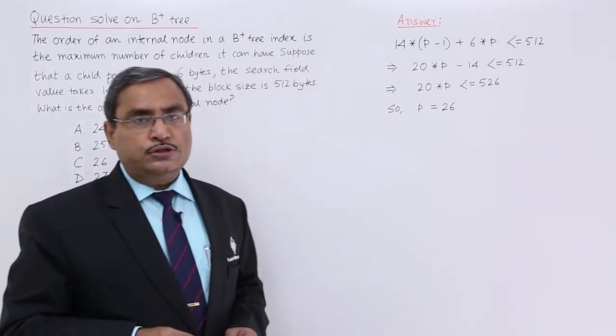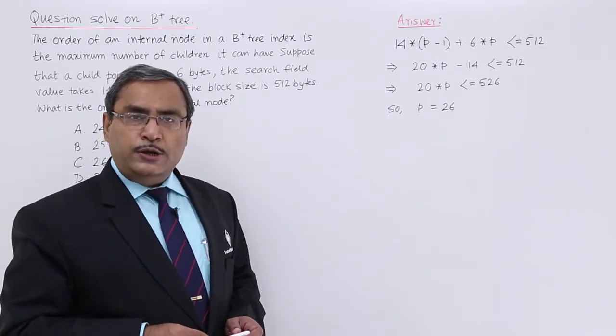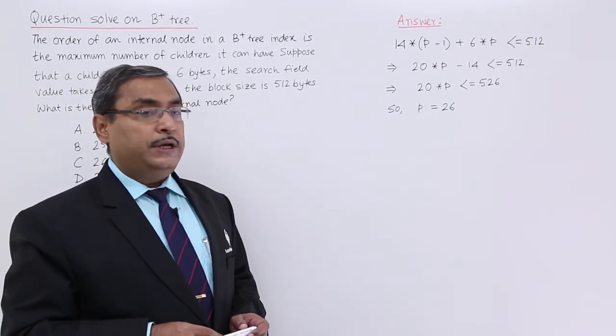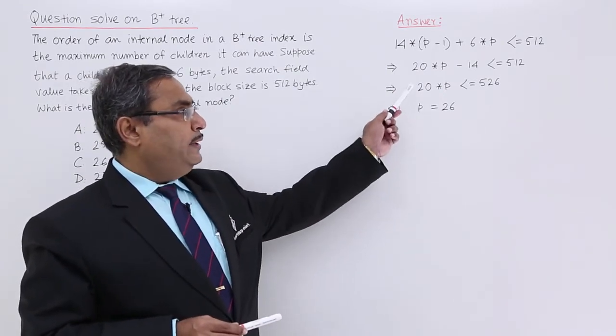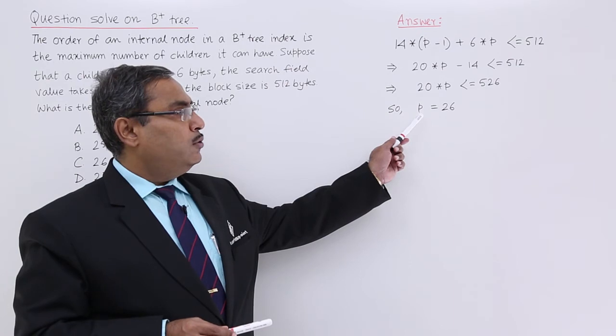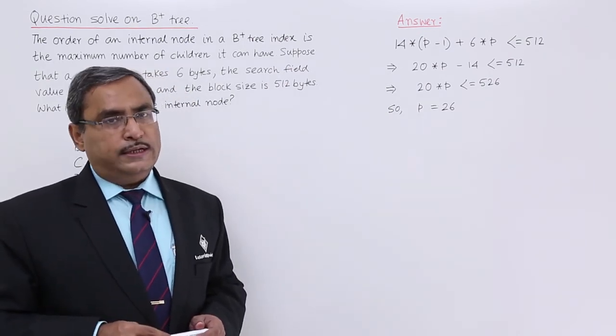Here is the respective calculation for us. 14 into p minus 1 plus 6 into p must be less than equal to 512 bytes. If you go on doing the calculation, you are getting the value as p is equal to 26.